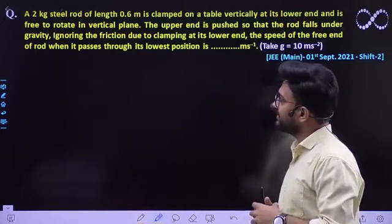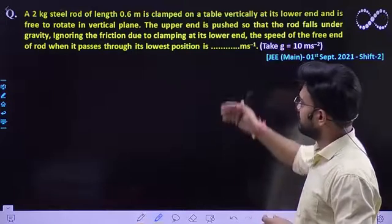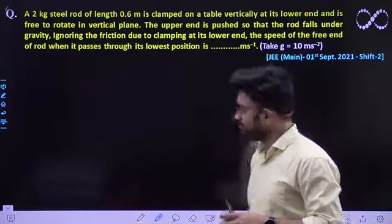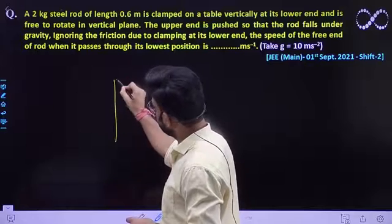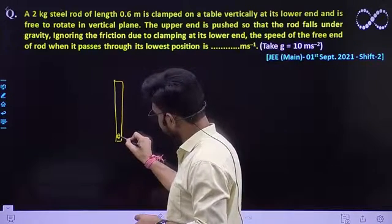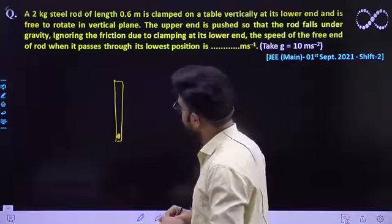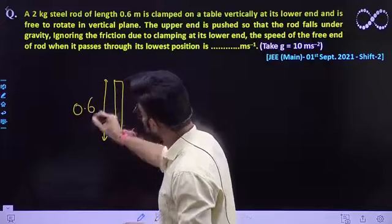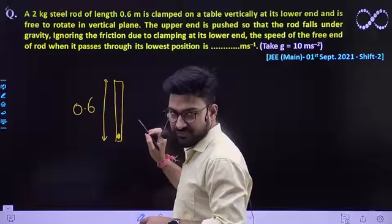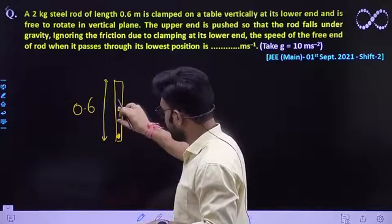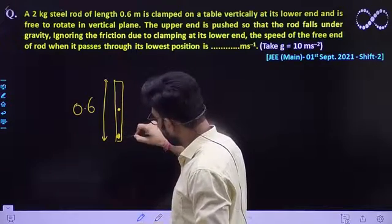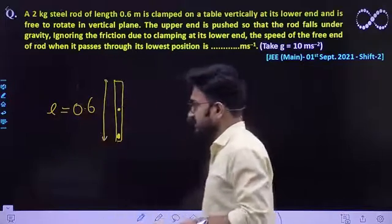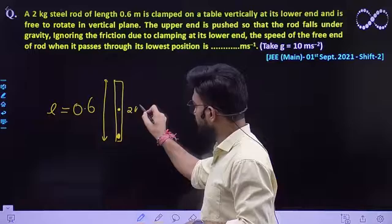A 2 kg steel rod of length 0.6 m is clamped on the table vertically at its lower end and is free to rotate in a vertical plane. The rod is clamped at its lowermost position, its length is 0.6 m and mass is 2 kg. The whole mass can be concentrated at its midpoint, which is at a distance of 0.3 m from the end.